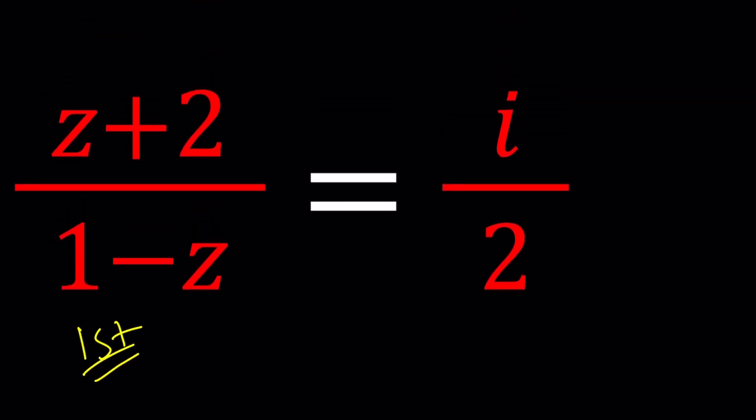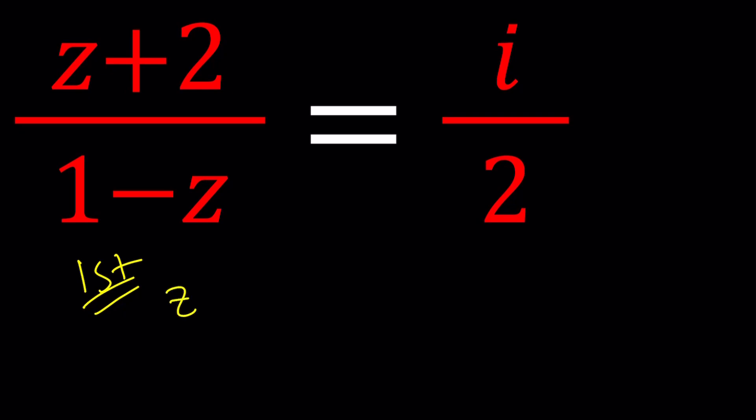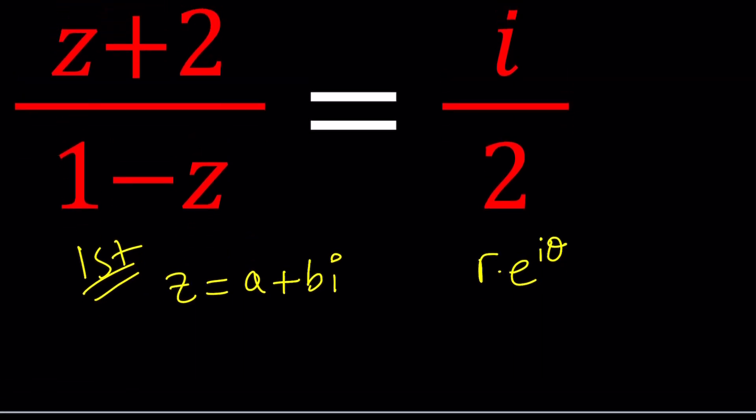So first method, since Z is a complex number, I can write it in standard form as A plus B I. Think about the alternative, see if you can write Z as R times E to the power I theta, and then solve for that. Alright, so let's go ahead and plug it in.